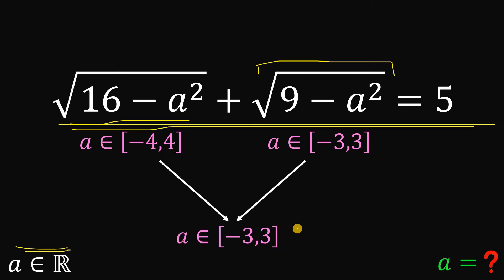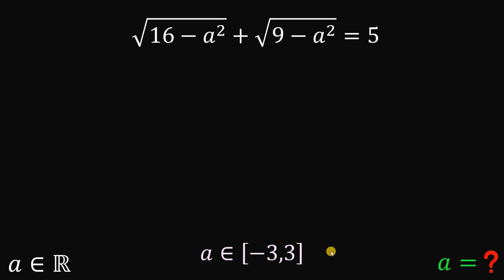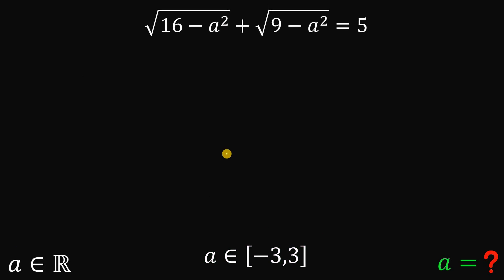A cannot be greater than 3, because if A is 4, then 9 minus A squared is a negative number. Though the other term is not negative, the square root of 9 minus A squared would be negative. We don't want a negative number inside our radical sign. Therefore, the possible values of A must be from negative 3 up to positive 3.